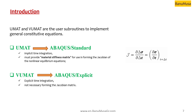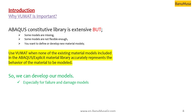UMAT and VUMAT subroutines are both used to define material equations of state. UMAT is used in the standard solver, and VUMAT in the explicit solver. When using UMAT for implicit time integration, you must provide the material stiffness matrix for forming the Jacobian of the linear equilibrium equations. When using VUMAT for explicit time integration, unlike UMAT, there is no need to define the Jacobian matrix.